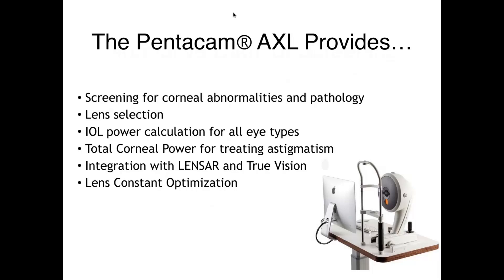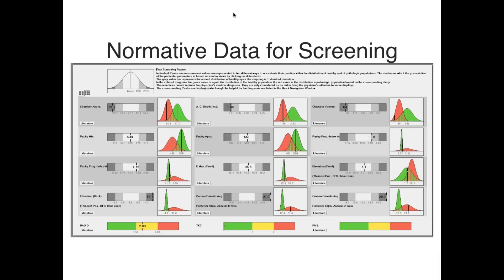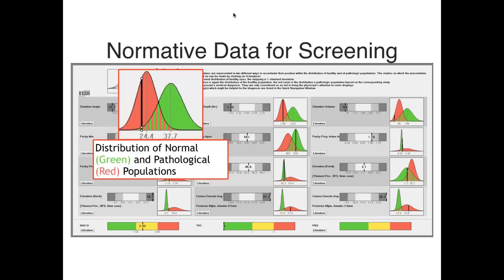Many of you may be familiar with this technology, which is intuitive in terms of determining what parameters are normal and fall outside a normal range. Simply put, if it's green, it's within a normal range; if it's yellow, it's one standard deviation outside of a normative database; and if it's red, it's two standard deviations outside. We can utilize this looking at anything from anterior chamber angle—to help make a decision on whether this angle is occludable—to K-max, hyperprolate corneas, and other abnormal corneal features that may suggest early ectasia or keratoconus.